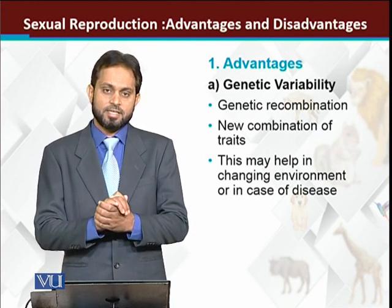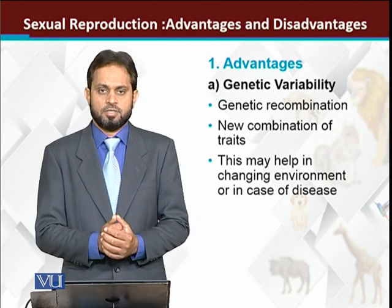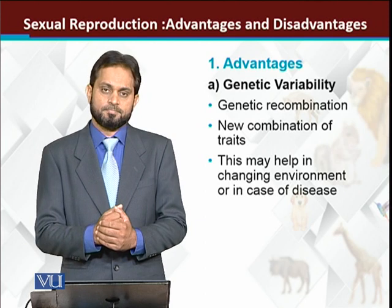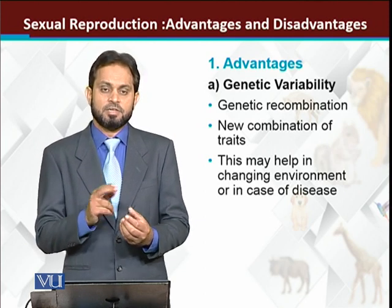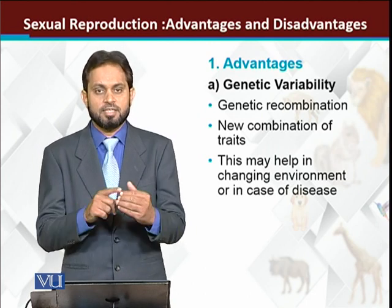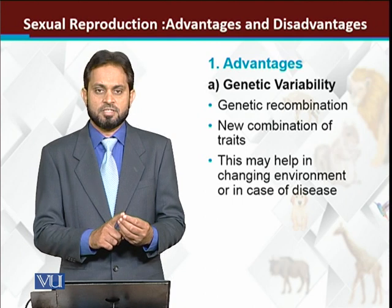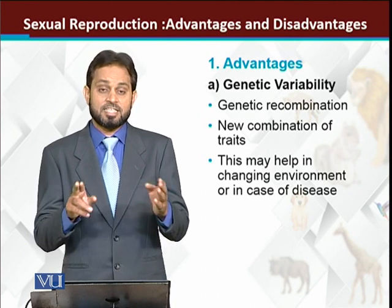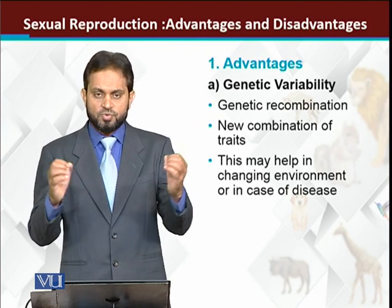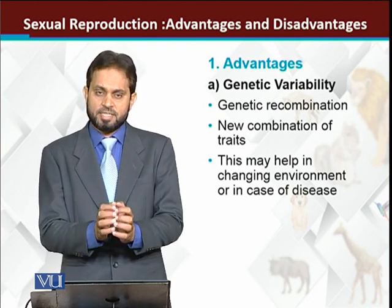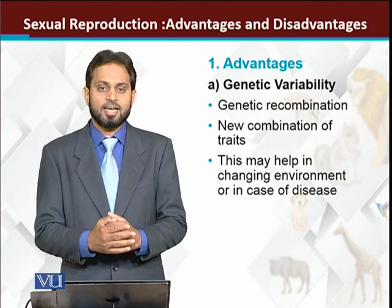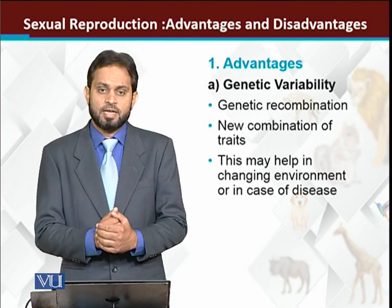The first advantage is genetic variability. Genetic recombination arises from sexual reproduction through two important events. Number one is meiosis during gamete formation, which involves recombination of DNA. The second is fertilization. So if you have a set of chromosomes, a new combination of genes arises — this is the benefit of genetic variability.